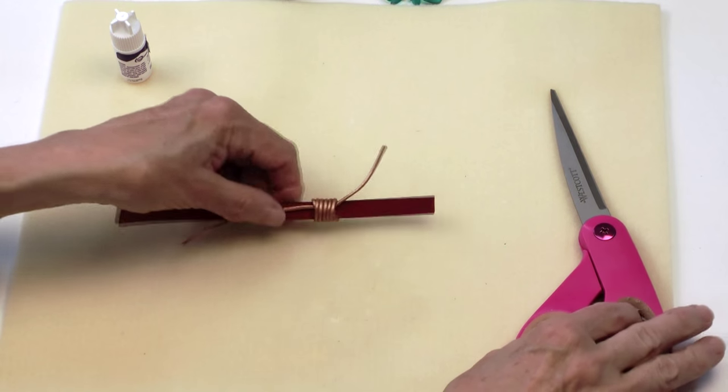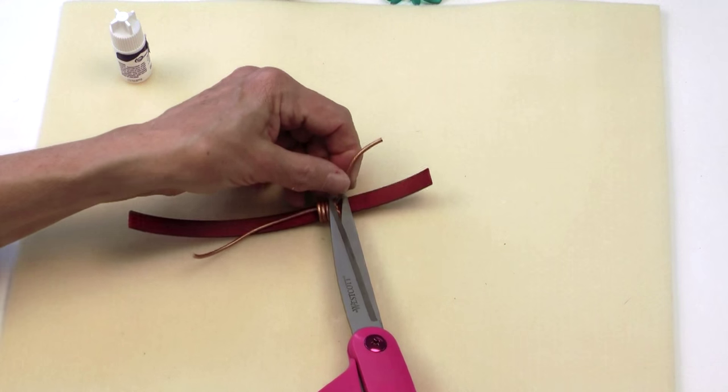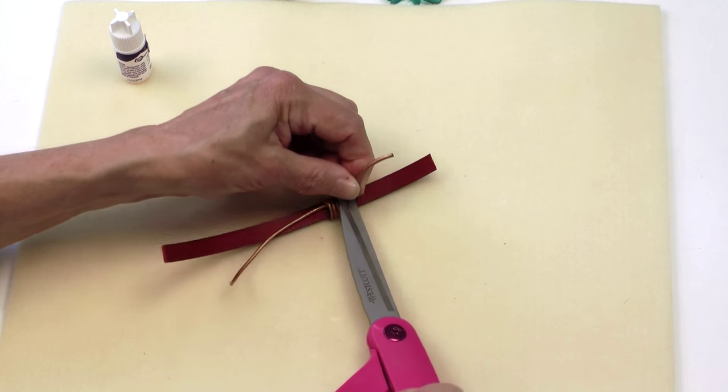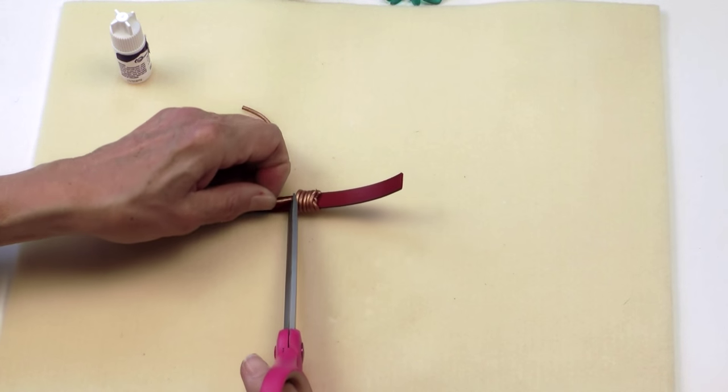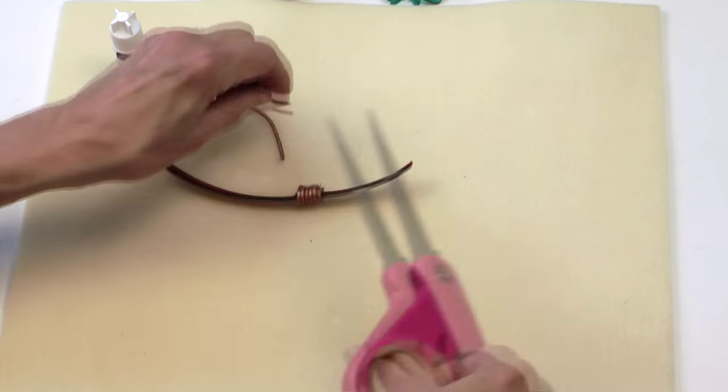To finish this, I will just use my scissors or flush cutters and trim the leather off right flush with the edge of the knot. There we go.